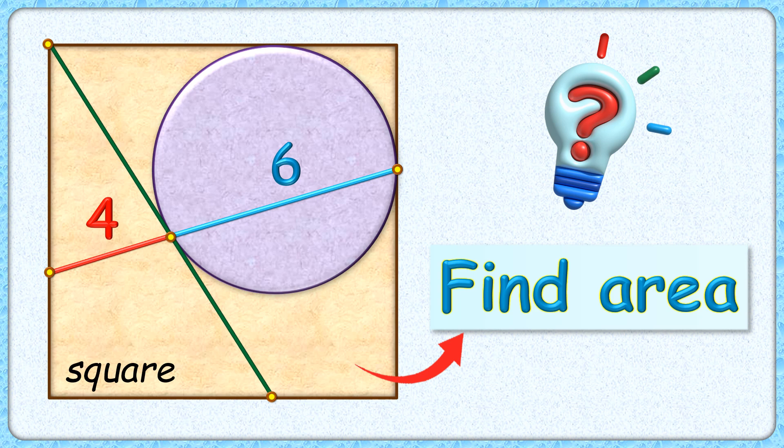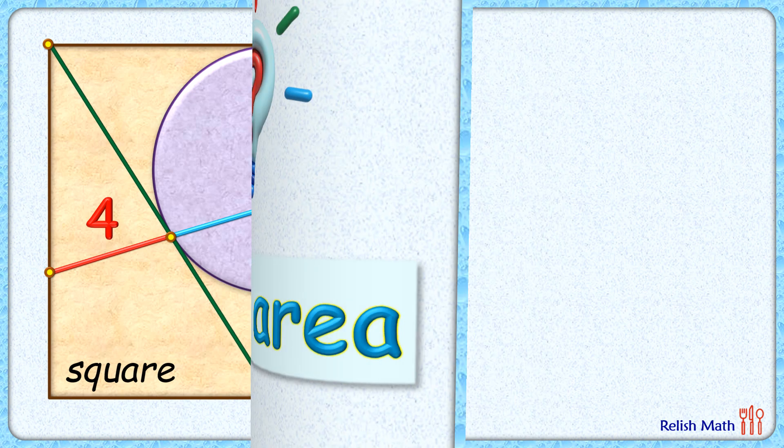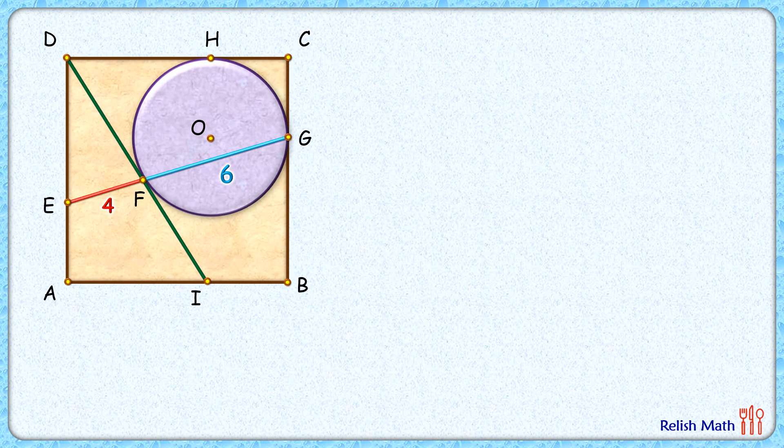This is an interesting question. Given is a square and a circle which is touching this green line segment and two sides of the square. The length of the chord joining this point of tangency is given as 6 centimeters, and the same line segment when extended forms this red line with length 4 centimeters. With this limited data, can you find the area of the square? Let's check this interesting solution.